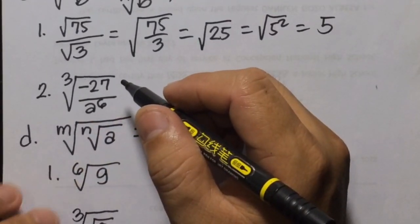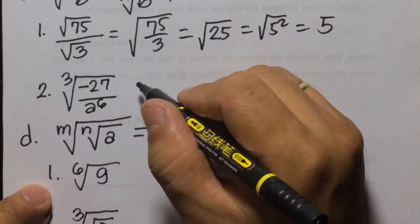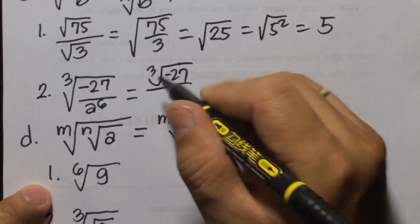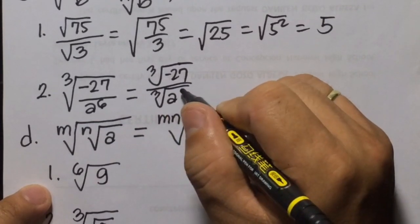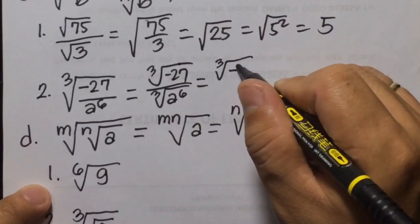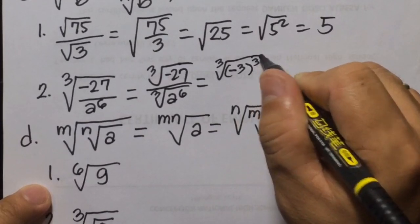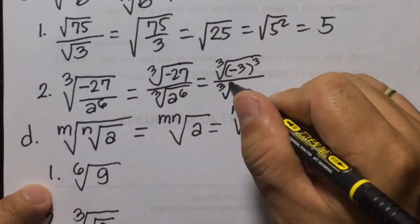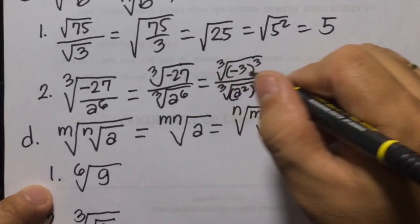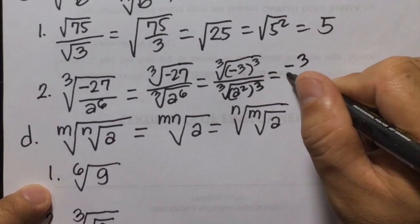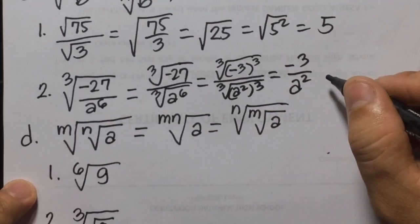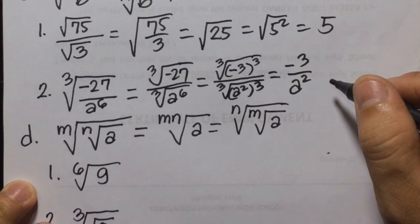Number 2: cube root of negative 27 over a to the power of 6. We can write this as cube root of negative 27 over cube root of a to the power of 6. Express cube root of negative 27 as cube root of negative 3 cubed. Then a to the power of 6 is cube root of a squared cubed. Cube root of negative 3 cubed is negative 3, and cube root of a squared cubed is a squared. So the answer is negative 3 over a squared.